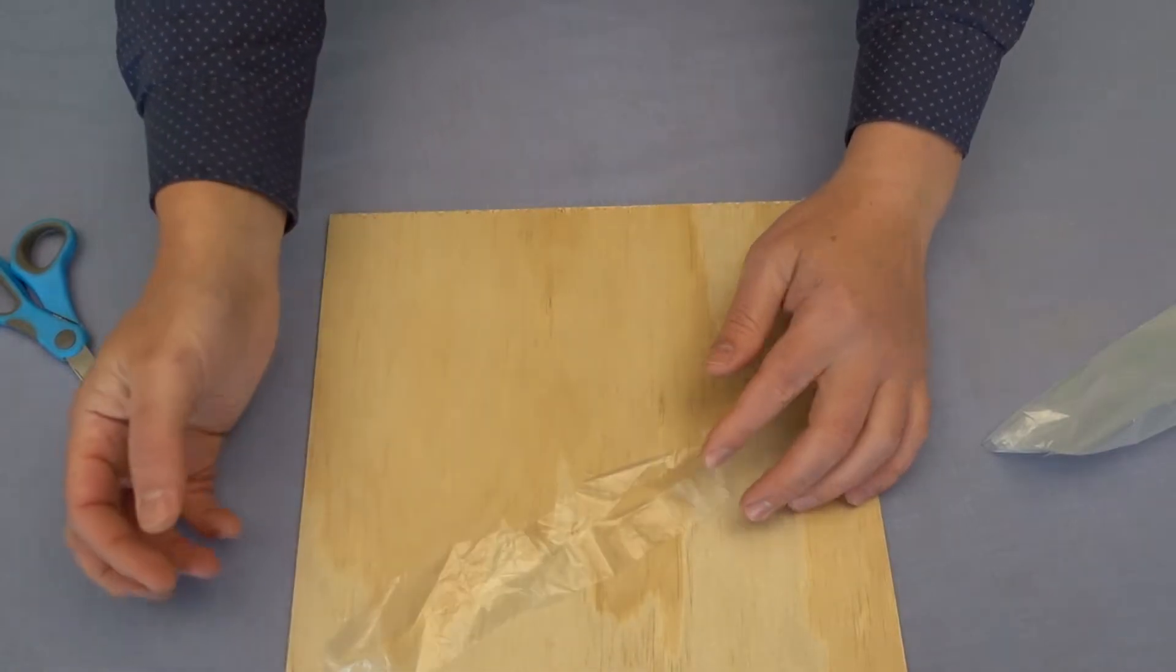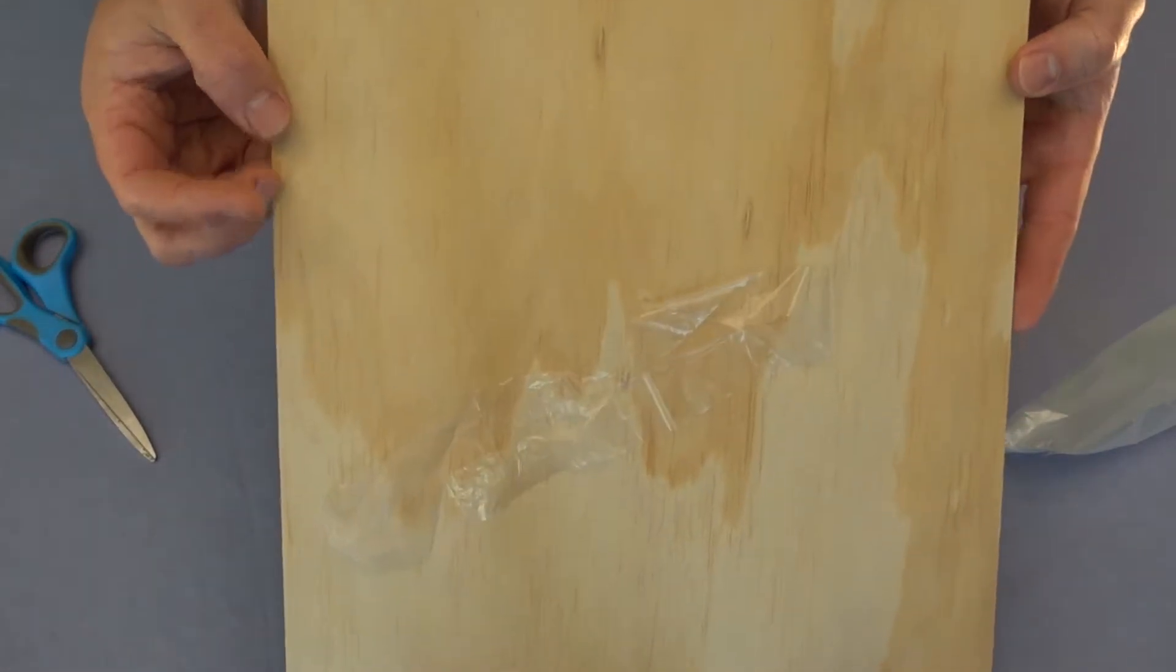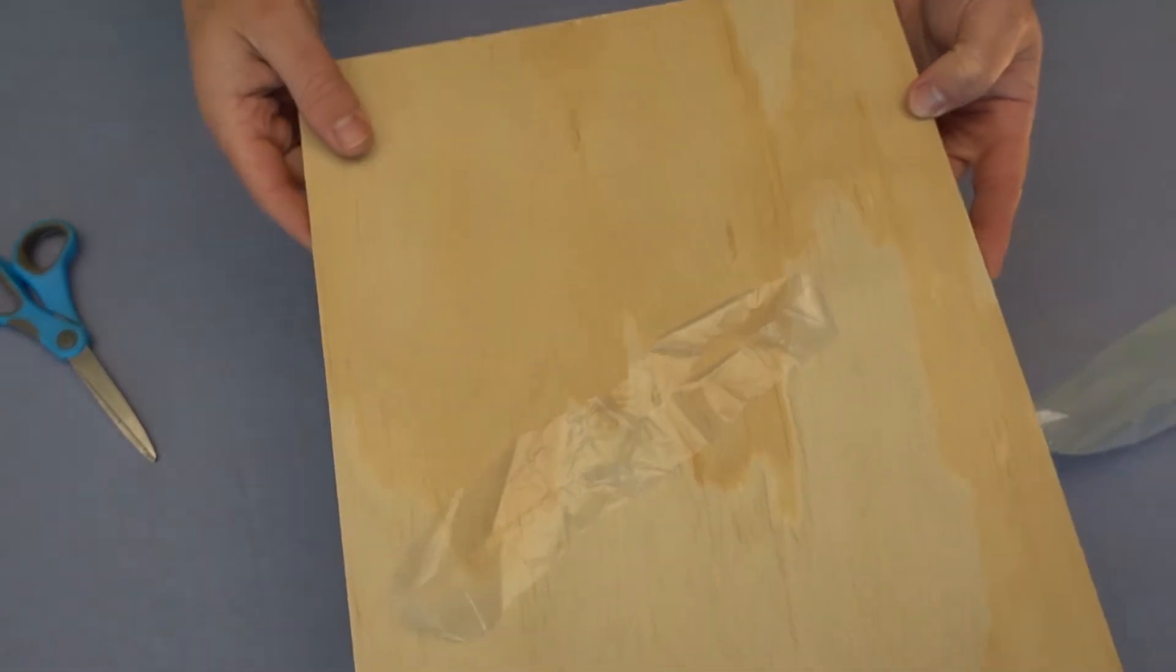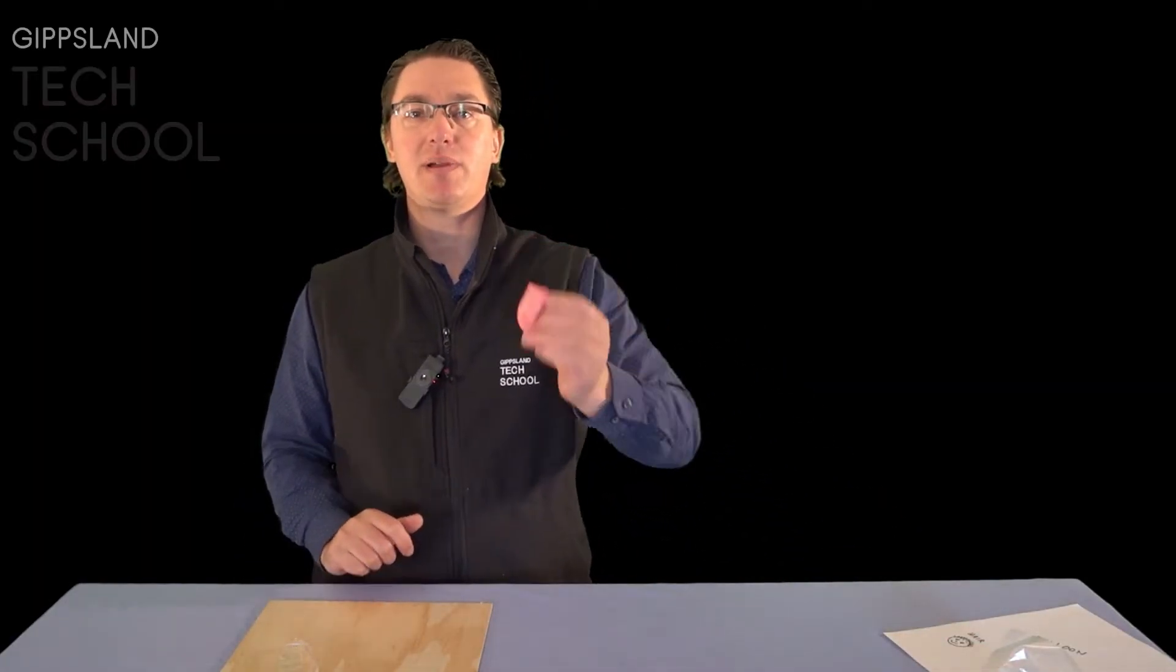You'll know that you're getting a charge if your plastic bag sticks to the board like this. That's what we're after. Once our freezer bag's charged, which we know because it's clinging to the surface, we move on to our balloon.